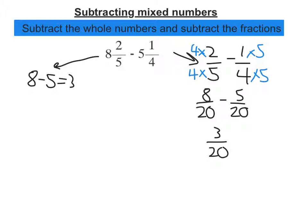Check to see if it cancels. There is no number that divides into 3 and 20, so that's as far as I can go. So I've done my subtraction. So let's bring these two bits together. I've got 3 wholes and 3 twentieths, and that's my answer.